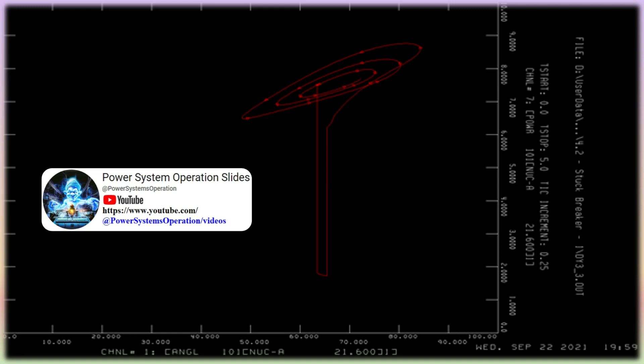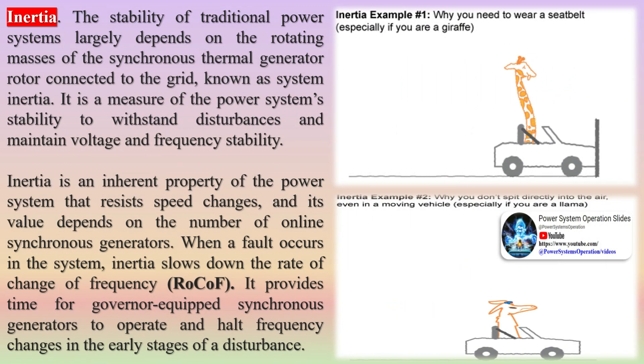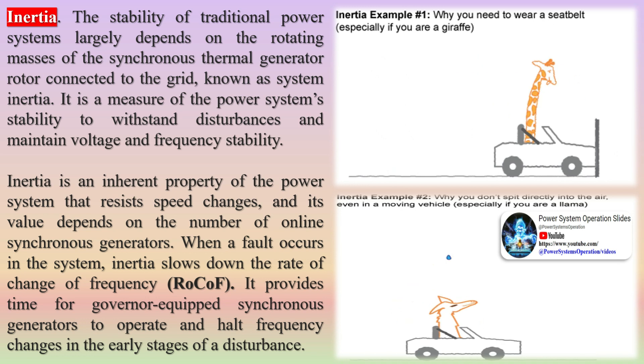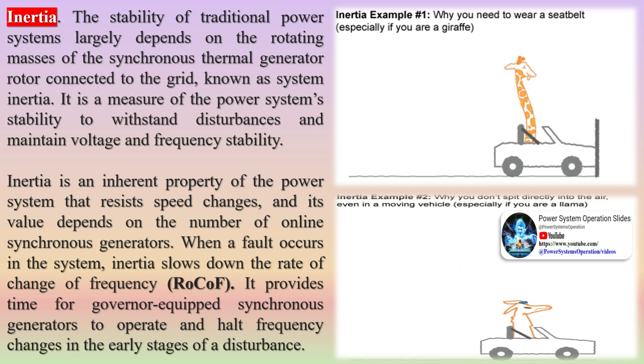Rotor angle stability, or simply angle stability, is the ability of synchronous generators (SGs) and motors in a power system to stay in synchronism after a disturbance. It is typically viewed as a generator-oriented issue and depends on whether each SG in the system can maintain or restore its balance between electromagnetic torque and mechanical torque.